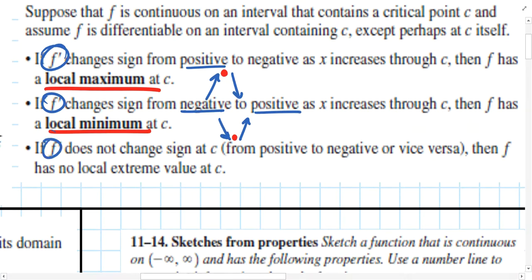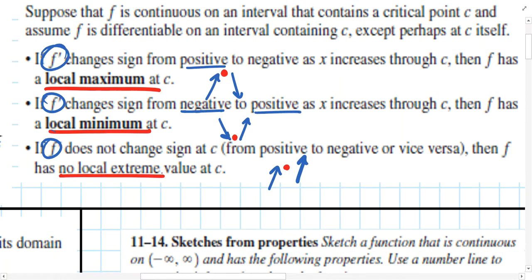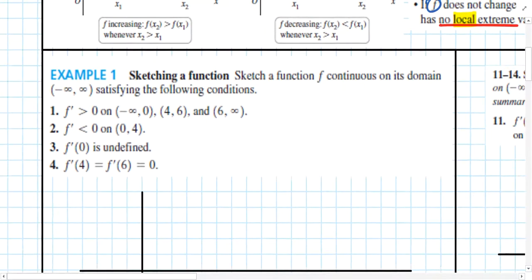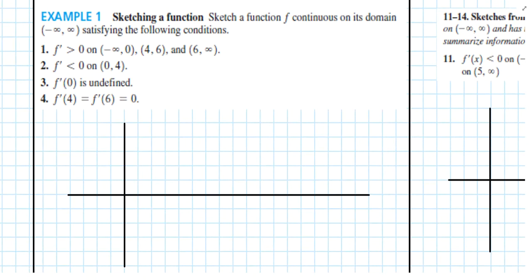If the first derivative does not change sign — say the first derivative is positive, we come across a critical point, and then the first derivative continues being positive — we may have reached just a flat point or a corner in the graph, but that doesn't guarantee a maximum or minimum, so we would say there is no extreme value at c. In all these cases, we're talking about local extreme values, not absolute. The Extreme Value Theorem from a couple videos ago helps identify absolute maximum and minimum points, and we can incorporate that with the first derivative test.